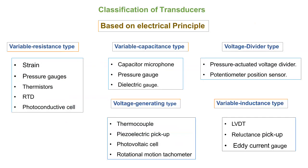Variable capacitance type examples include capacitor microphone, pressure gauge, and dielectric gauge. The main structural feature is two parallel metal plates that maintain a distance between them, with a dielectric medium like air filled in between — this is the variable capacitance type. Then, voltage divider type includes pressure-actuated voltage dividers and potentiometer position sensors. In a voltage divider, it is used to convert a varying voltage into a useful one. For example, a potentiometer measures potential difference and displays it.